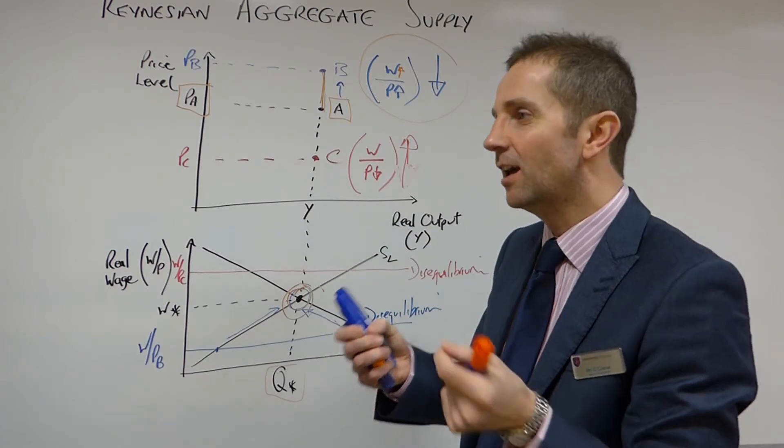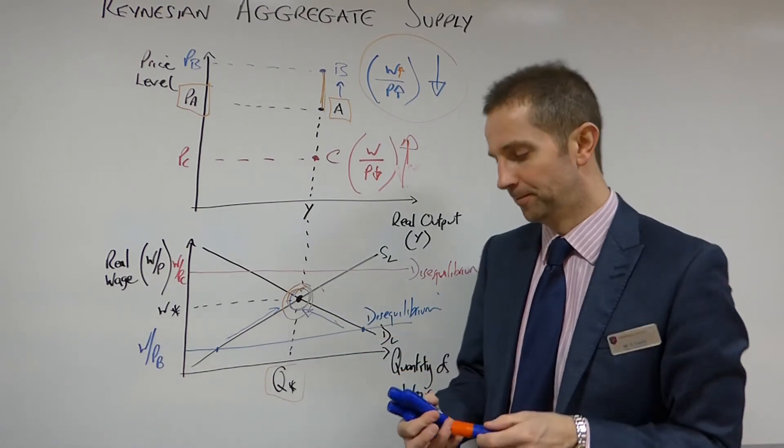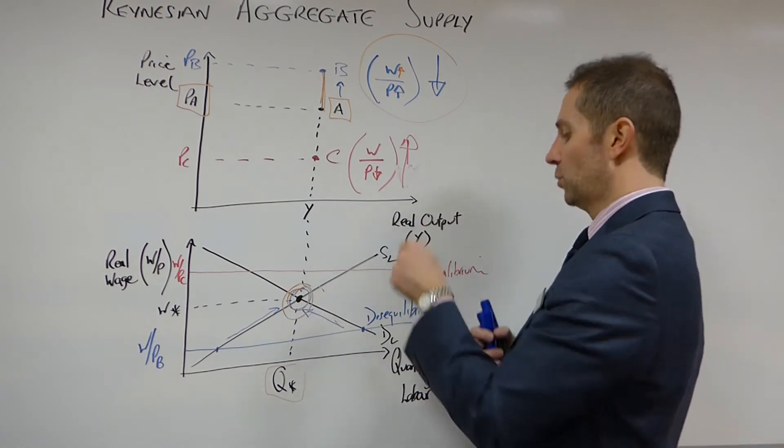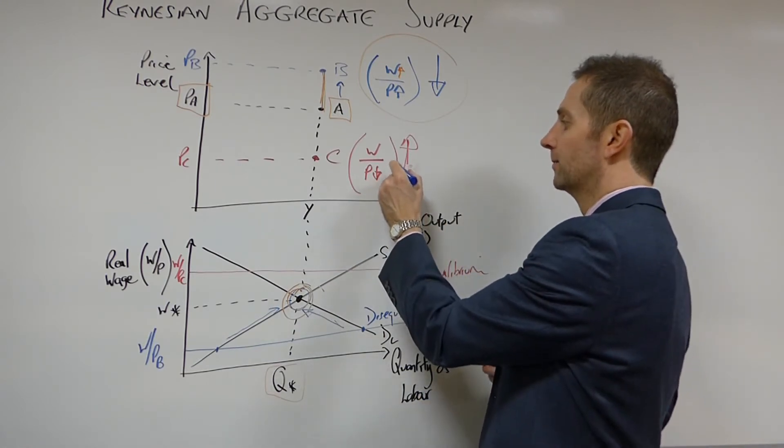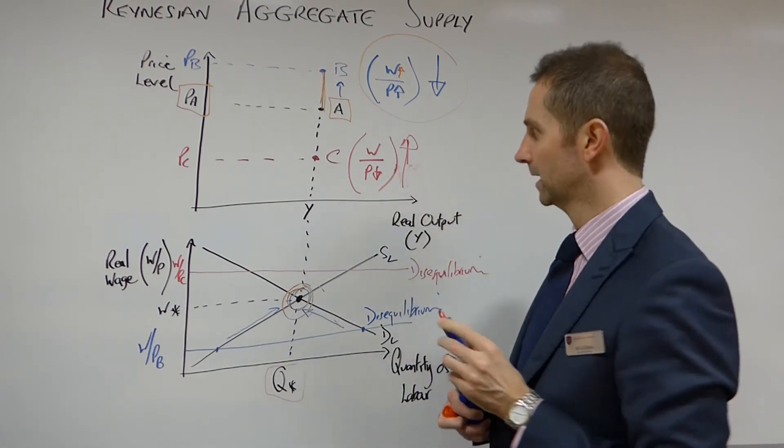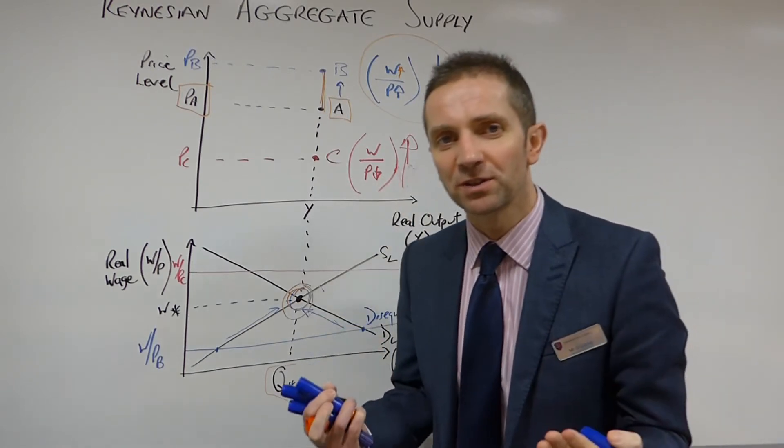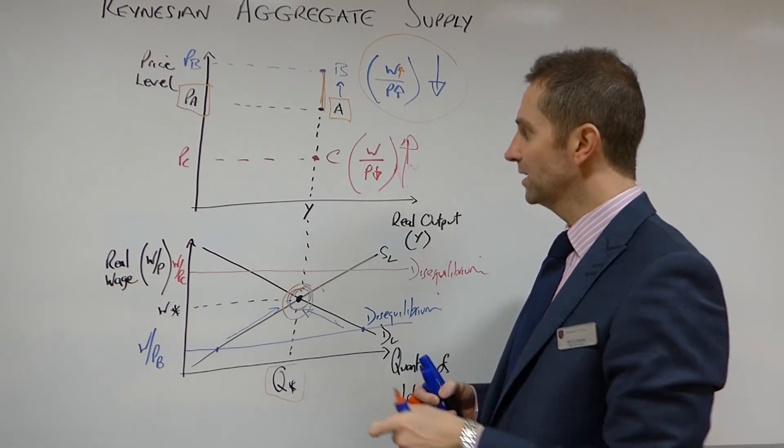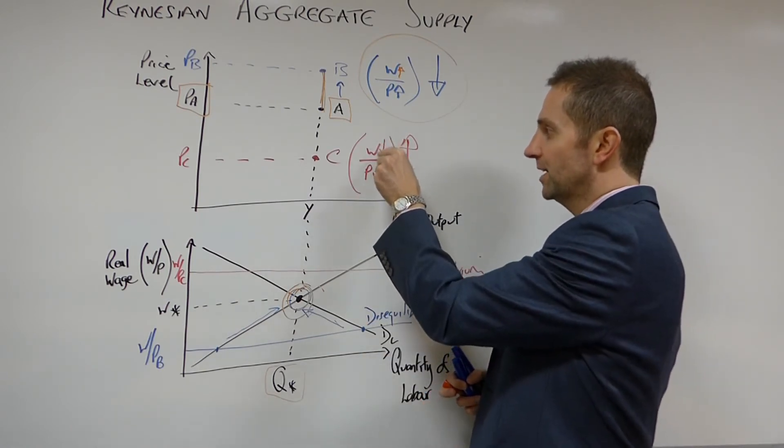And this is the light bulb moment that I was talking about. What needs to happen here in order to restore equilibrium if the price level has fallen? In order to restore equilibrium, the money wage also needs to fall. So if this falls by 10%, the money wage needs to fall by 10%.